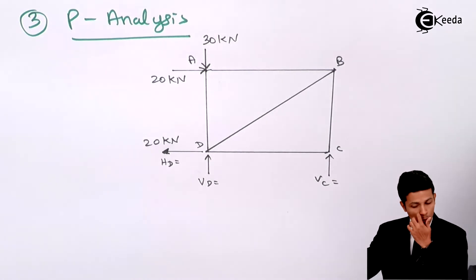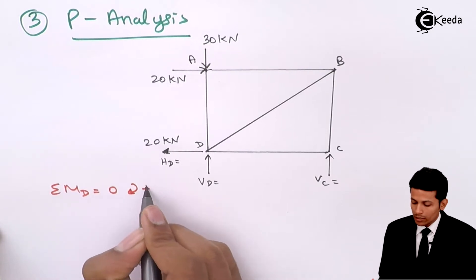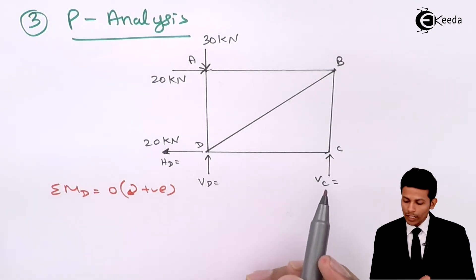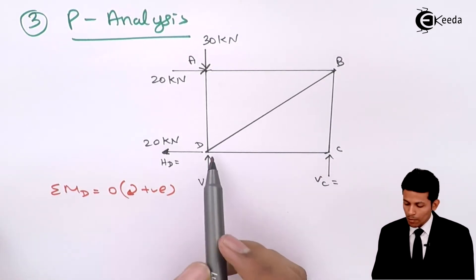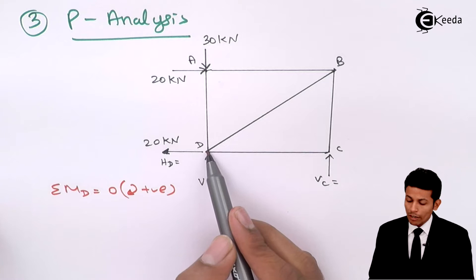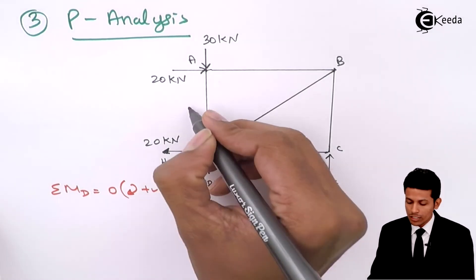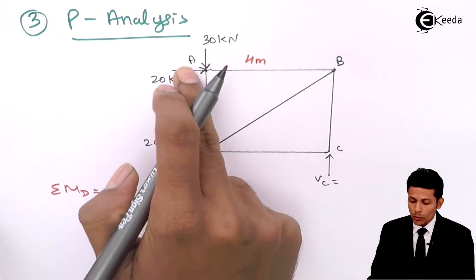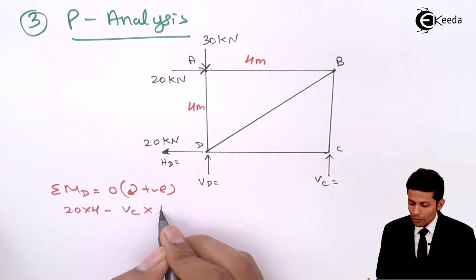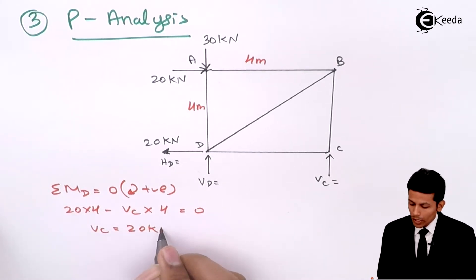To find VC, take moment at D equal to zero, clockwise positive. The 20 kN force acts at 4 meters, so 20 into 4 positive, minus VC into 4 equals zero. Therefore VC equals 20 kN.